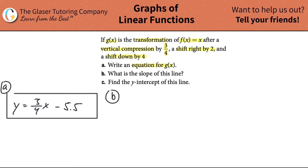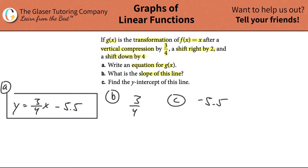Letter B: What is the slope of this line? We already figured that out — the slope is 3 quarters. And letter C: Find the y-intercept. It's negative 5.5. So we were actually done. By finding the equation, we can simply identify the slope and y-intercept, especially when we put it into mx plus b form.